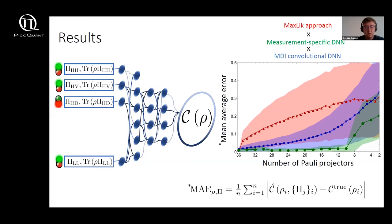This now measurement device independent deep neural network has a first convolutional layer and the input data now consists not only of probabilities but also contains the information in what basis we are taking a measurement. And also in the training data set we choose at random which projectors will contribute to inferring concurrence.